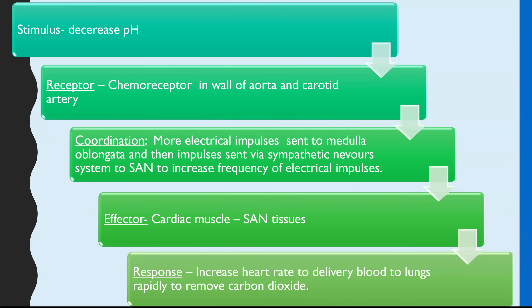For a decrease in pH — meaning it's becoming more acidic due to more carbon dioxide or lactic acid — this is detected by chemoreceptors in the wall of the aorta and the carotid artery. More electrical impulses are sent to the medulla oblongata, and then more impulses are sent via the sympathetic nervous system to the SAN, increasing the frequency of electrical impulses. The effector is cardiac muscle and SAN tissues; the response is increased heart rate to deliver blood to the lungs to remove carbon dioxide more rapidly.